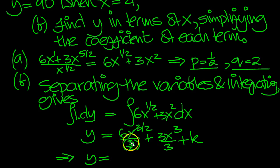So now let's tidy it up. y is equal to 6 over 3. The 3 goes into 6 twice. This 2 comes up to be with that 2 to make 4. x to the 3 over 2. Plus the 3's cancel here and we're just left with x cubed. Plus k.